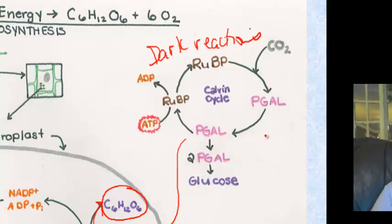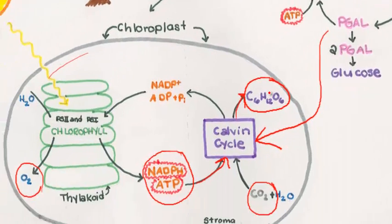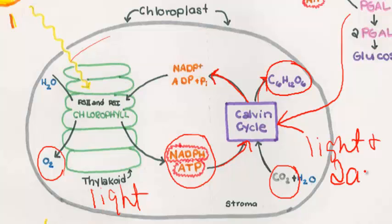After the cycle goes through six times, glucose comes out. This diagram breaks down the PGAL, the whole cycle, and the carbon dioxide fixation — where RuBP and CO2 merge together. The Calvin cycle gives off glucose, and then returns molecules back to the light reactions, starting the whole process over. So it is a cycle. The light reactions occur during the light, and the dark reactions occur in both light and dark, because they depend on carbon dioxide.